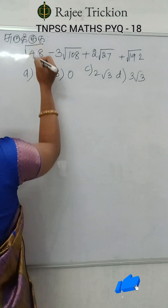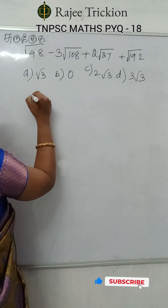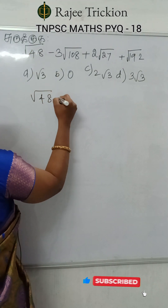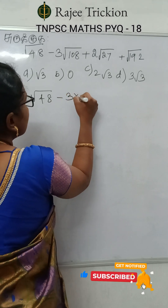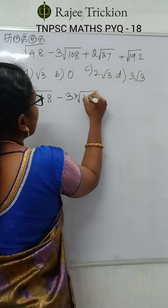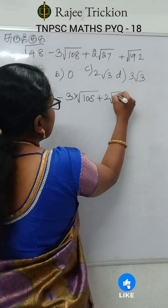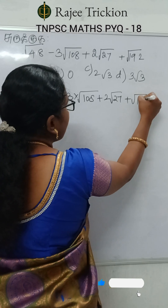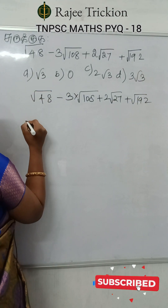How do we solve this sum? How do we solve root of 48? Root of 48, 3 into root of 108 plus 2 into root of 27 plus root of 192. How do we solve root of 48?